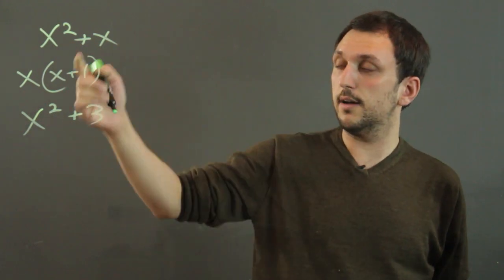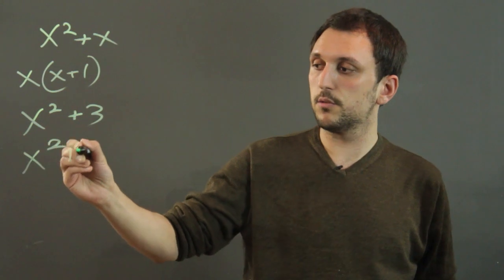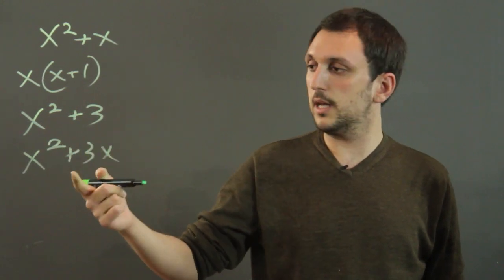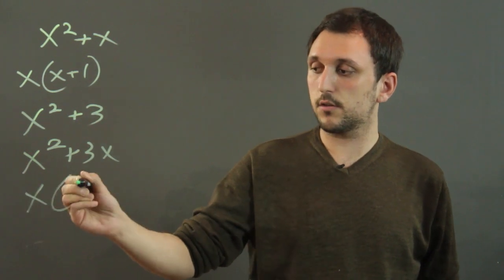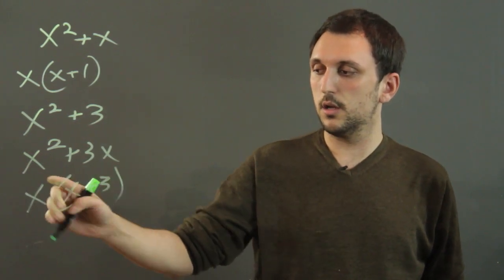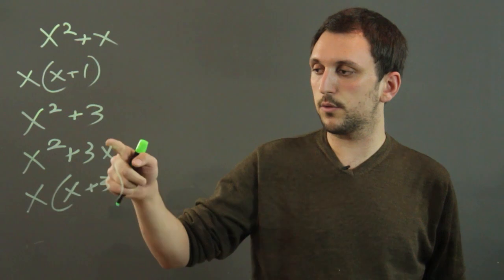However, you can have x squared plus 3x, which would be, we can pull out an x from each side, and then we'd have x times x plus 3. x times x is x squared, x times 3 is 3x.